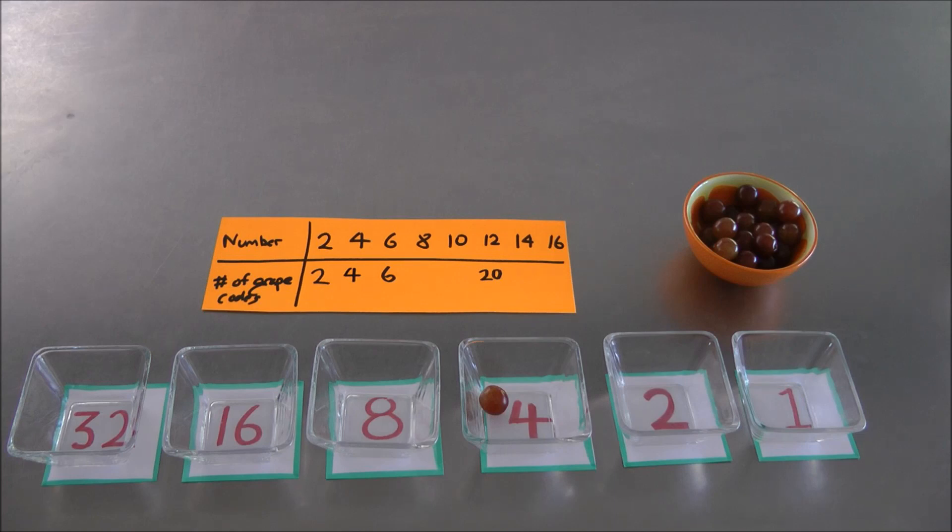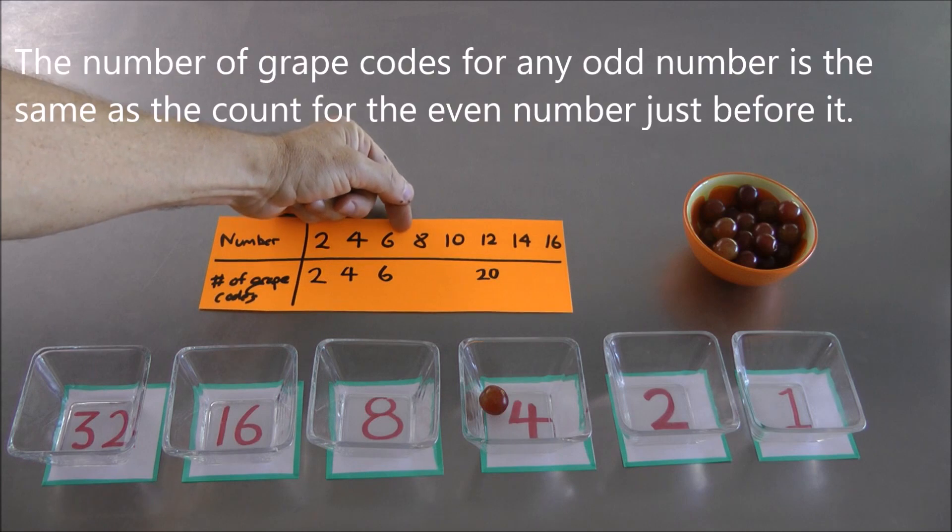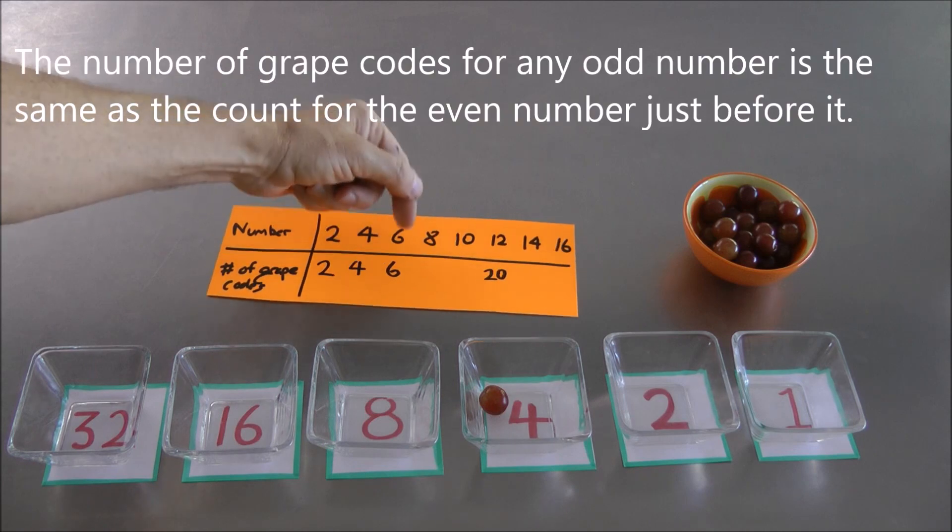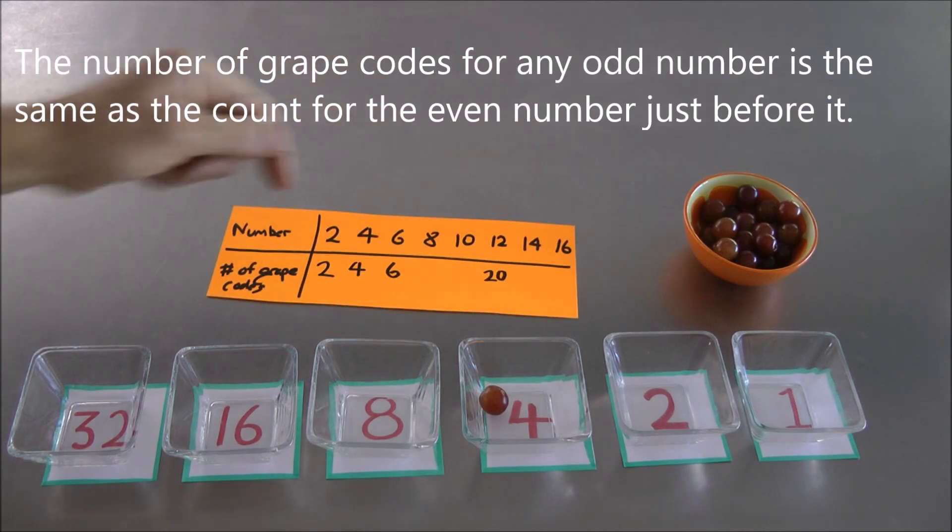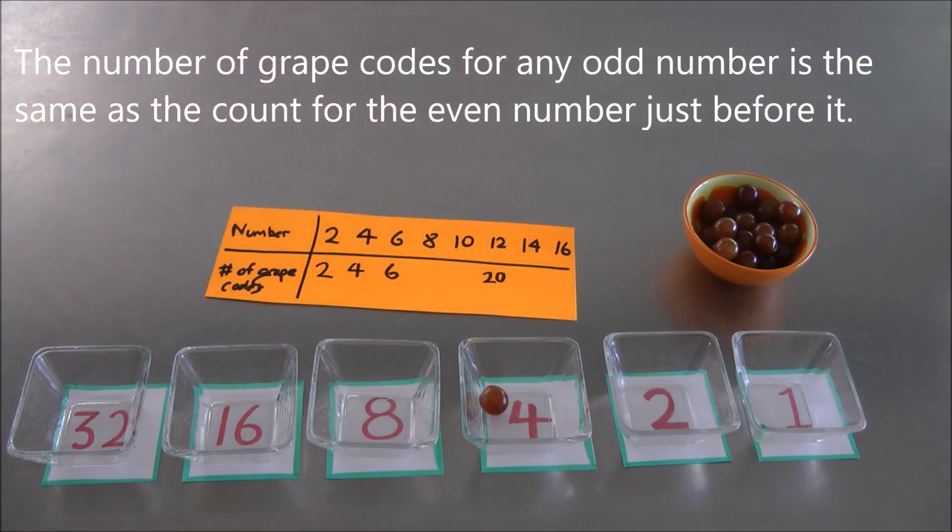And then we can keep going. Now you might wonder, why did I skip the odd numbers here? Why aren't I working out the number of grape codes for seven, nine, and so forth? Well, if you remember earlier in the video, we did argue the number of grape codes for seven is going to be the same as the number for six. The number of grape codes for any odd number is going to be the same as the grape codes for the even number just before it.